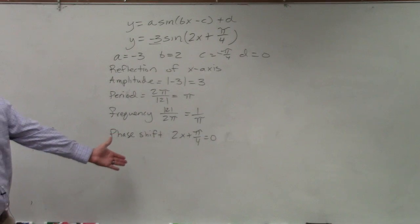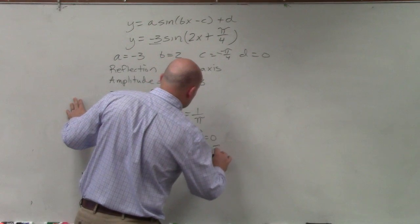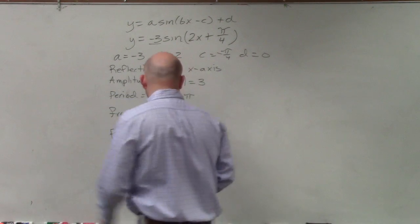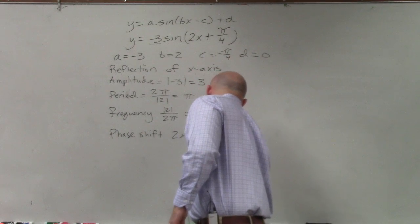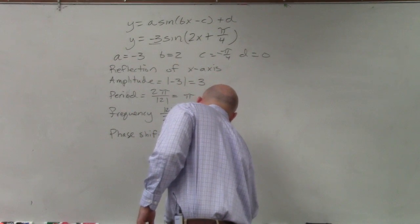Now I need to solve for x. Subtract π over 4: 2x equals negative π over 4. Divide by 2, divide by 2: x equals negative π over 8.